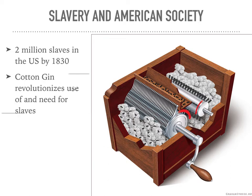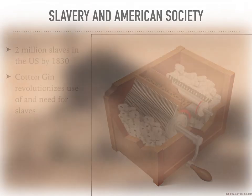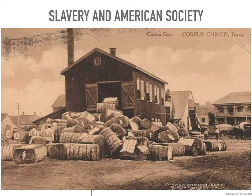Some things happen in the early 1800s that make slavery even more important. The most significant is the invention of Eli Whitney's cotton gin. Cotton is very difficult to harvest — you have to pick through thorns and pull out seeds by hand. But Whitney's invention separated the cotton from the seed, so one slave could now produce twice as much cotton. This made the cotton industry far more profitable.